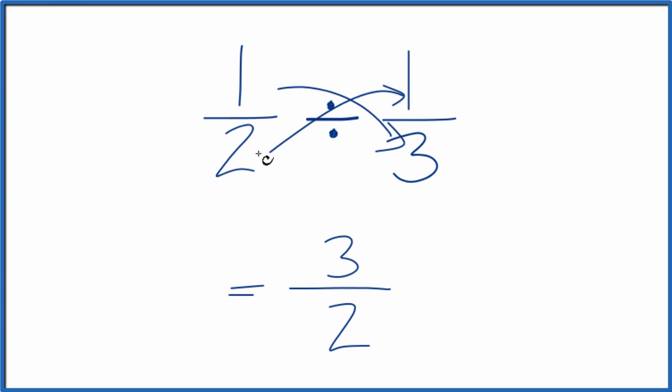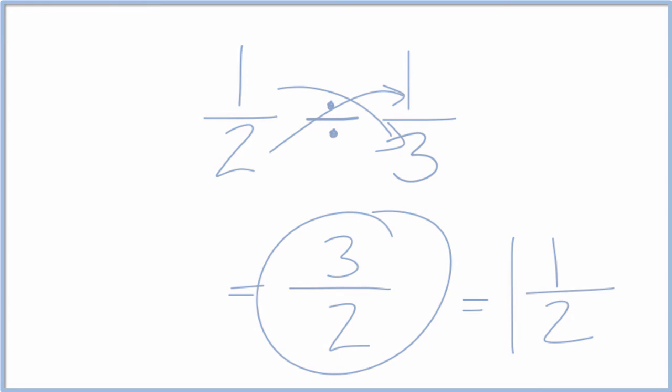So either way, the fraction one-half divided by one-third, that gives you three over two, or you could write it as one and one-half. This is Dr. B. Thanks for watching.